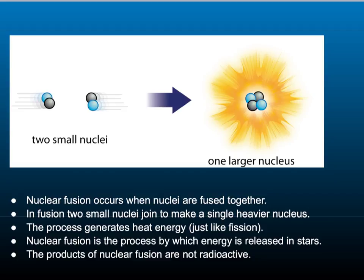Nuclear fission is a very important way of producing a lot of energy. However, there is an even more efficient process. This process is nuclear fusion. In nuclear fusion, nuclei are fused together, or joined together, to make a heavier nucleus.